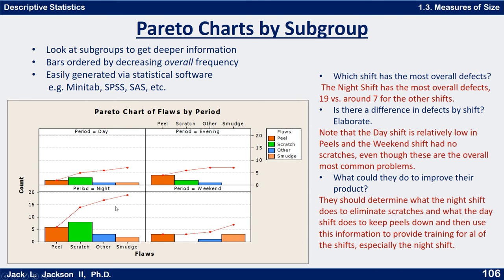You can see that because the bars are tallest and end at a higher spot, there are more overall problems with the night shift than any other shift. It has 19 defective parts on the night shift, whereas the others are all in the neighborhood of about seven. Notice that the day shift is relatively low in peels, and the weekend shift has no scratches at all — interesting, even though these are the two most common problems overall.